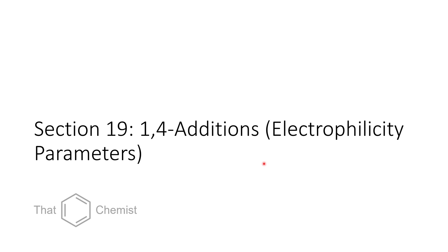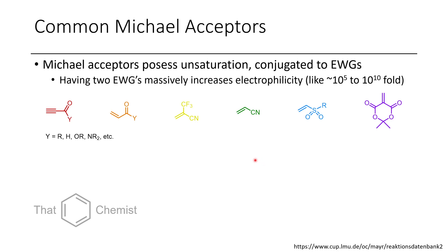Now let's get into today's material: 1,4 additions and electrophilicity parameters. Michael acceptors are when you have an electron withdrawing group in conjugation with a double or triple bond. Michael acceptors accept electron density into the beta position, putting a negative charge on the alpha position. It doesn't need to just be a carbonyl — CF3 groups also help this process, but something like a cyano with a trifluoromethyl would be more reactive than just a cyano on its own. You could also have functional groups like a sulfone, and if you have two electron withdrawing groups — such as this diester, which is a derivative of Meldrum's acid after being treated with formaldehyde — we can greatly increase the reactivity of our electrophile by 10^5 to 10^10, which is dramatically more reactive.